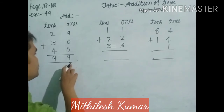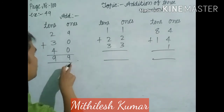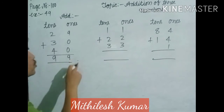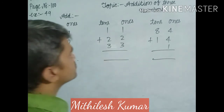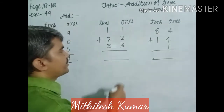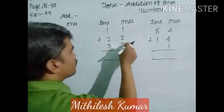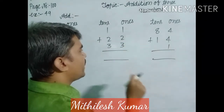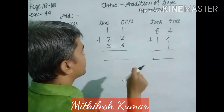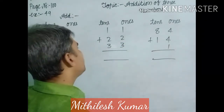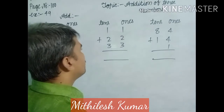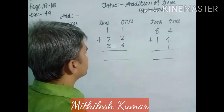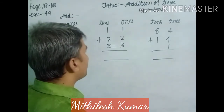In the 1s digit column the answer is 9, and the 10s digit is also 9. So for the next process of the related topic, go to the 1s digit column first. This is the rule for additions, subtractions, and any mathematical operations — always start from the right side.